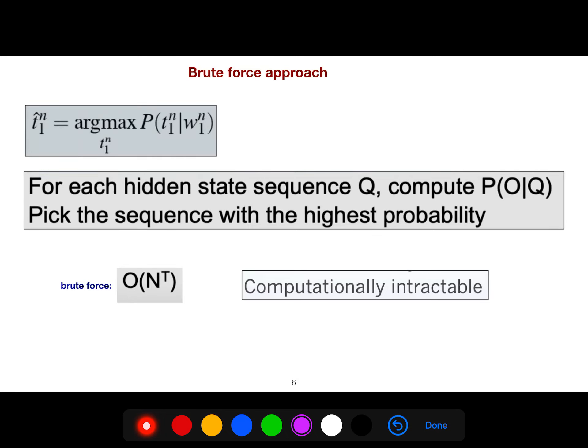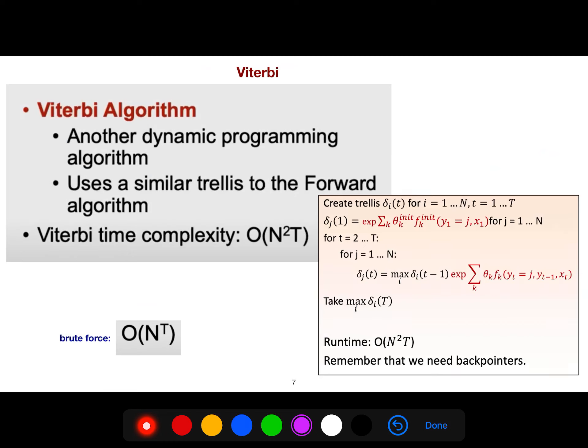The simple thing that we do is brute force. But in computer science, we are much more smart. We try to use, we don't like brute force. It takes time. This is the order of complexity. It's computationally intractable. Because for each hidden state sequence, computing the probability of observation, given the Q, your states, we pick the sequence with the highest probability. Brute force is computationally intractable.